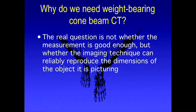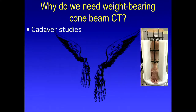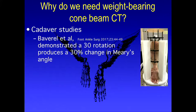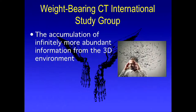The real question is not whether the measurement is good enough, but whether it is the right measurement — does the image really give you what you're trying to find out? To get that for a single patient, you may need multiple exposures, and even then the result can be invalid. Cadaver studies have shown that 30 degrees of rotation produces a 30 percent error in Murray's angle, giving an accuracy rate of about 72 percent — meaning if you use this technique on 1,000 patients, you'll be wrong on 280 of them. That's a big error.